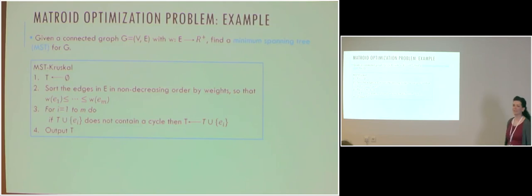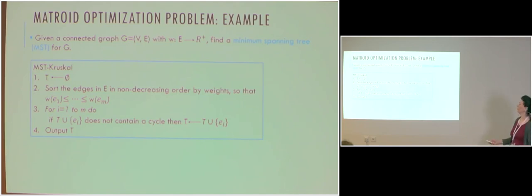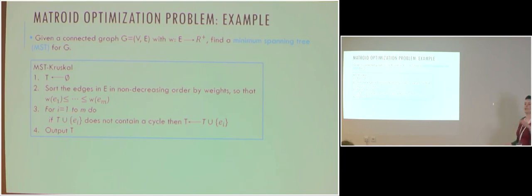A classic graph problem: given a connected graph with positive weights on edges, find a minimum spanning tree. Recall Kruskal's algorithm: start with an empty tree, sort edges in non-decreasing order by weight, and in each iteration add edge e_i to the tree if it does not create a cycle. This is seemingly different from what we discussed, but here is the connection.